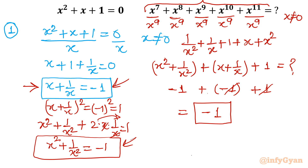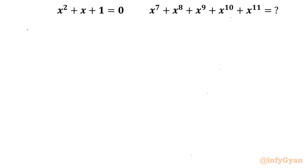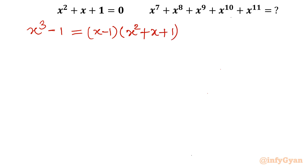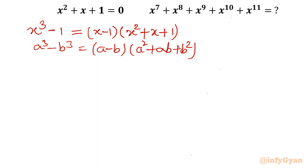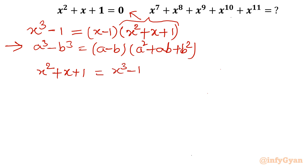Now the second method — another way of solving this problem. I will find out the algebraic identity first. I will write the formula for x cube minus 1, using the a cube minus b cube identity: a minus b times a square plus ab plus b square. So x square plus x plus 1 equals x cube minus 1 divided by x minus 1.